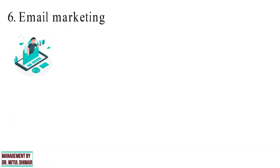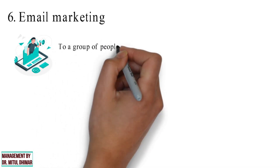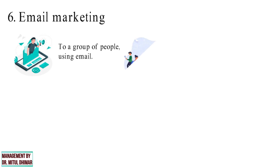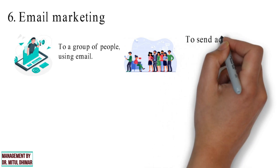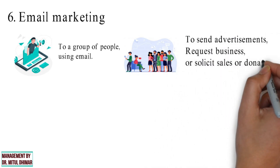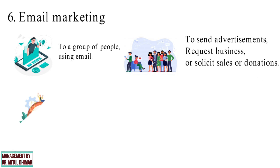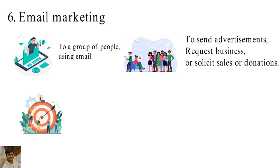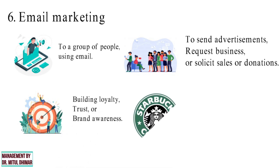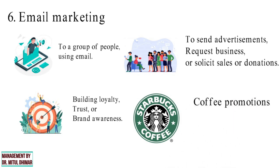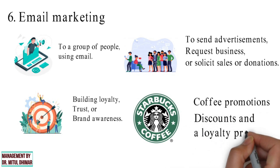Point number 6: Email Marketing. Email marketing is the act of sending a commercial message, usually to a group of people using email. In its broadest sense, every email sent to a current or potential customer could be considered email marketing. It involves using email to send advertisements, request business, or solicit sales or donations. Email marketing strategies generally seek to achieve one or more of three main goals: building loyalty, trust, or brand awareness. For example, Starbucks email campaigns not only offer news about coffee promotions, but also offer news about discounts and a loyalty program.